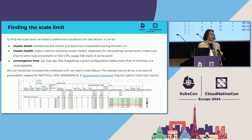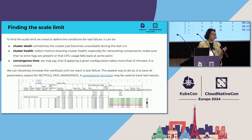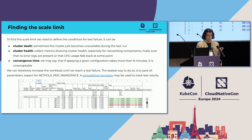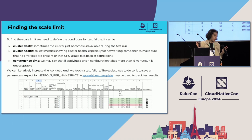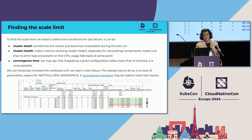You can see the OVN kube-node pod CPU usage, which is the component that actually implements the network policies. When the network policies are applied, the CPU usage pumps up, and then goes down when everything is done. So let's say you've run this test for a thousand network policies. The dashboards look good. CPU usage is fine. What do you do next? You need to find the scale limit.